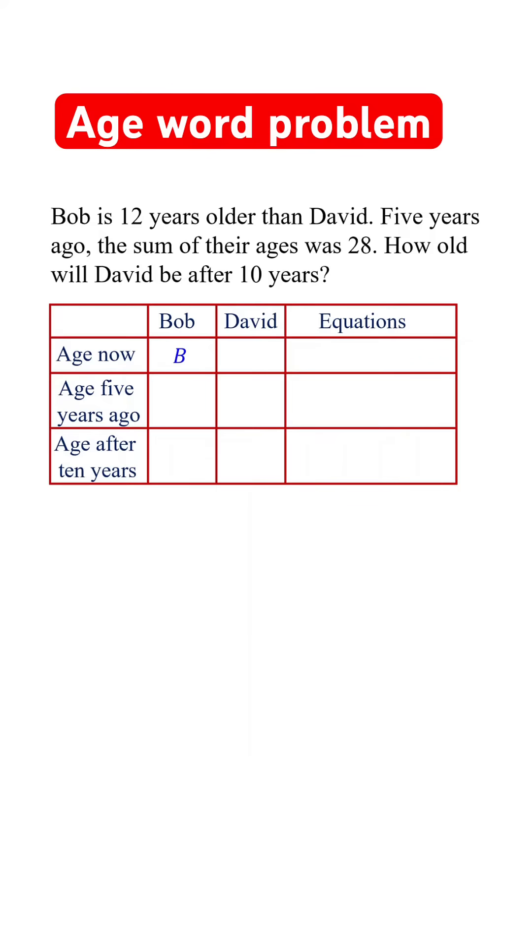Let's say the present age of Bob is B and David is D. So five years ago, they were five years younger, and after 10 years, they will be 10 years older.